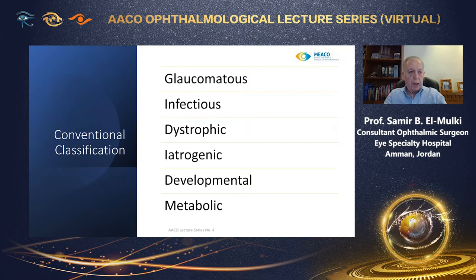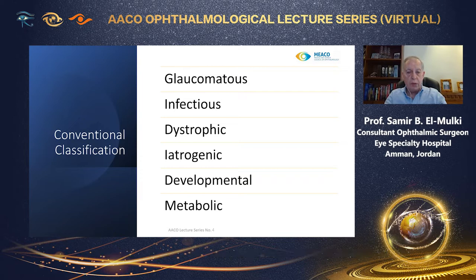Describing a developmental corneal opacity as being Peter's anomaly is akin to diagnosing someone with a respiratory problem as having a cough. It is neither precise, diagnostic, nor informative about prognosis.